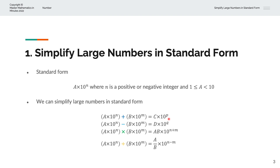Similarly, if we're subtracting two large numbers in standard form, we will first subtract the numbers, and then convert that into standard form as d multiplied by 10 to the power of q.